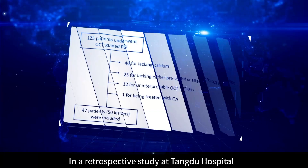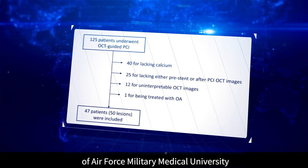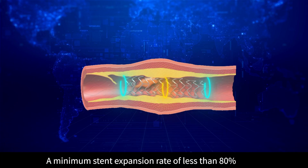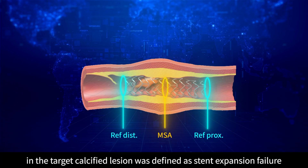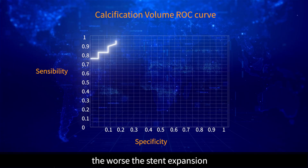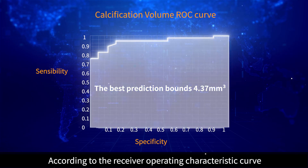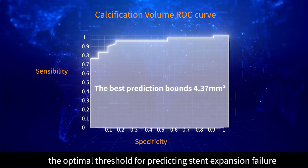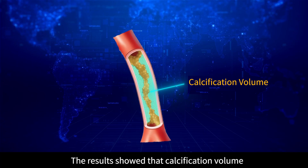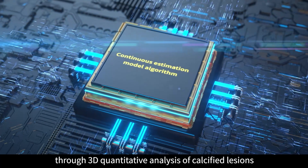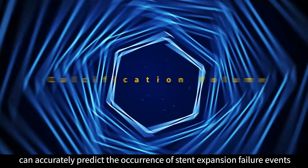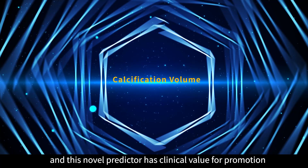In a retrospective study at Tangdu Hospital of Air Force Military Medical University, 47 patients underwent OCT-guided PCI. A minimum stent expansion rate of less than 80% in the target calcified lesion was defined as stent expansion failure. Results showed that the higher the calcification volume, the worse the stent expansion. According to the ROC curve, the optimal threshold for predicting stent expansion failure based on calcification volume was 4.37%. Calcification volume through 3D quantitative analysis can accurately predict stent expansion failure events, and this novel predictor has clinical value for promotion.